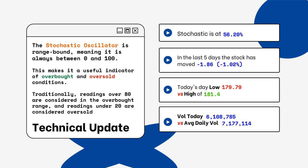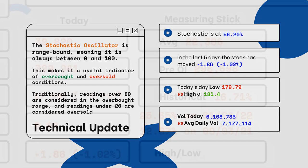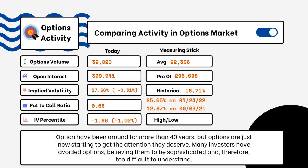We've also provided today's volume of shares traded and also the average daily volume. You want to see how much volume is being traded and if it is above or below the average daily volume level. This tells you how relevant the move is from the stock today.